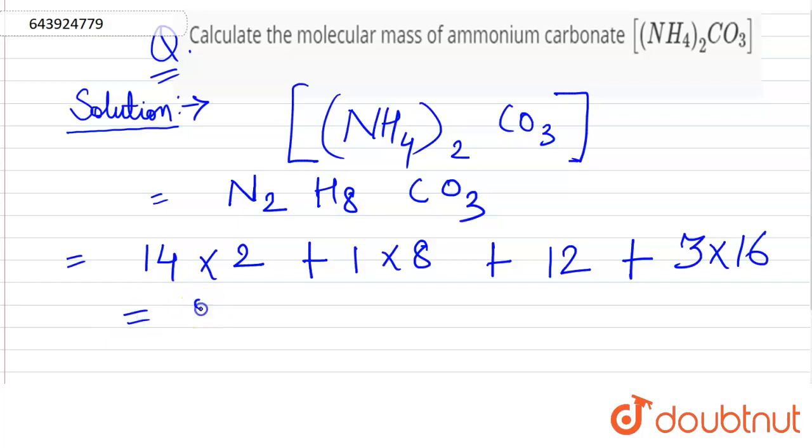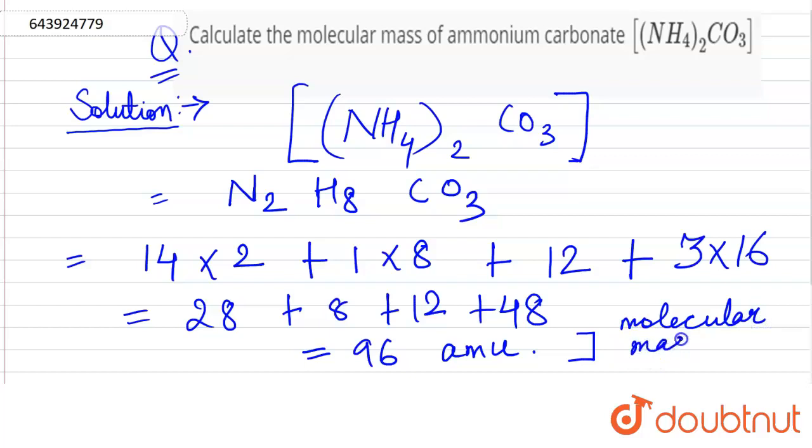So by solving this we get 28 plus 8 plus 12 plus 48, and the final answer is 96 atomic mass units. This is the molecular mass of (NH4)2CO3.